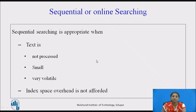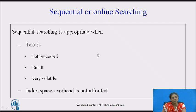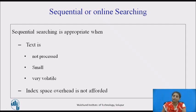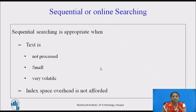First we will see when to prefer sequential searching. Sequential searching means scanning the text to find occurrences of the pattern. It is appropriate when the text is not preprocessed, when the text is too small, when the text is too volatile to build an index, or when the index space overhead cannot be afforded.